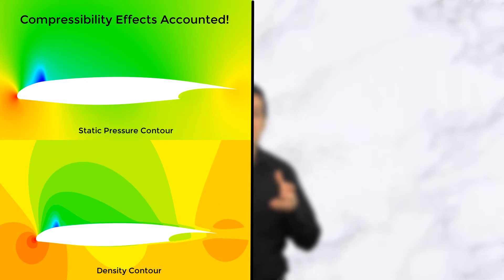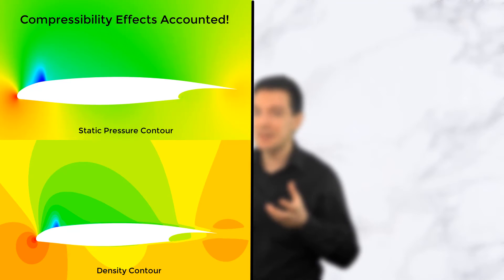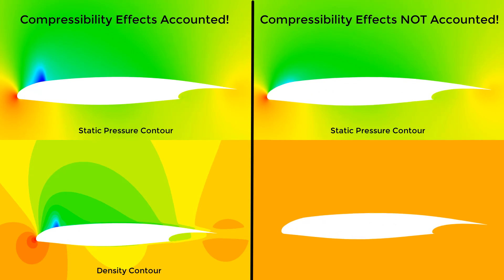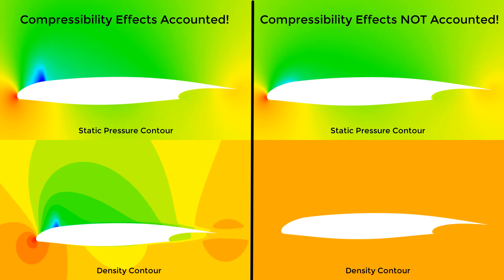Similar trends can be seen in the density contours. If we instead perform the simulation without considering the effect of compressibility, we will get the following contours of pressure and density. As you can see, the differences are quite substantial.